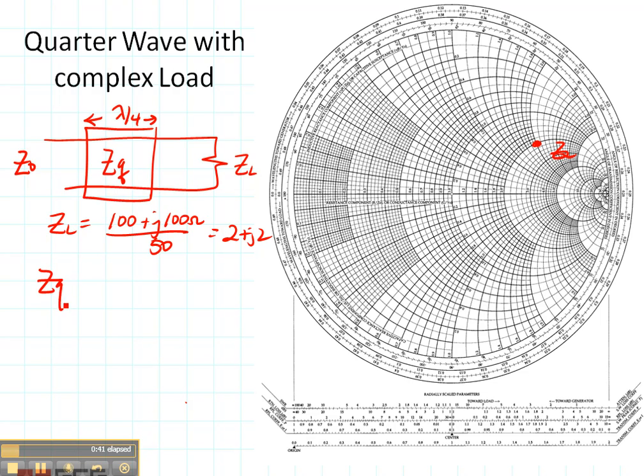ZQ is going to be the square root of Z0 which is what I want and ZA, which is right here, as long as ZA is strictly real. That's what we've done before.